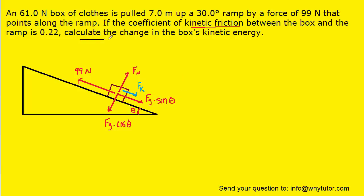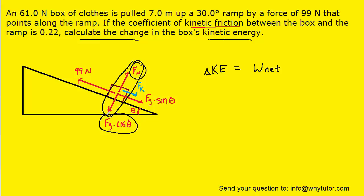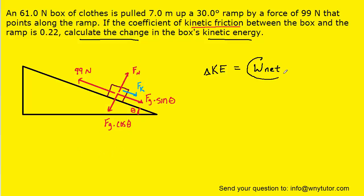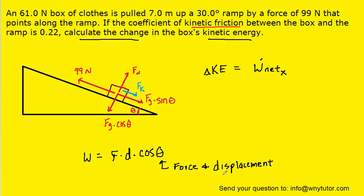To calculate the change in the box's kinetic energy, we recall that the change in kinetic energy equals the net work done on the box. In the y direction, the normal force and the Fg cosine theta force cancel each other out, so the work done in the y direction equals 0 joules — we can ignore those forces. In the x direction we will have net work. Work in general equals a force times a distance multiplied by the cosine of the angle between the force and the direction of displacement.